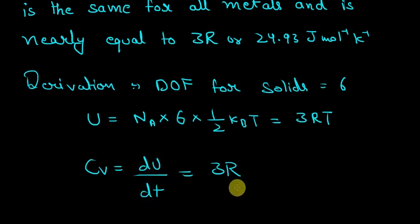Cv is du by dt. Just derivative it and we get 3R. This is the Dulong and Petit's law.